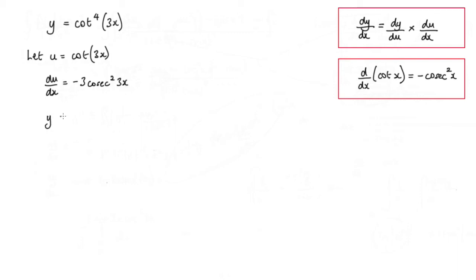Now y is now equal to u to the power of 4. So we're substituting in cot 3x into here to get u to the power of 4. So dy by du is equal to 4u cubed.